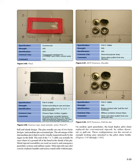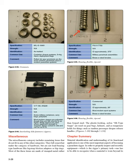Miscellaneous: The miscellaneous category includes remaining items that do not fit in any of the other categories. They fall somewhat under the category of hardware, but are not load-bearing type hardware like leg strap friction adapters or hip rings. Most of these items are made of stamped metal rather than forged steel. The plastic-looking nylon SR-type snaps are used on gear bags, helmets, and as temporary holds for things such as tandem passenger drogue release handles.